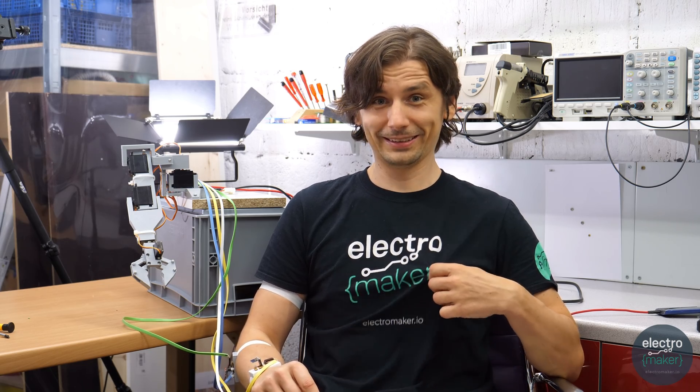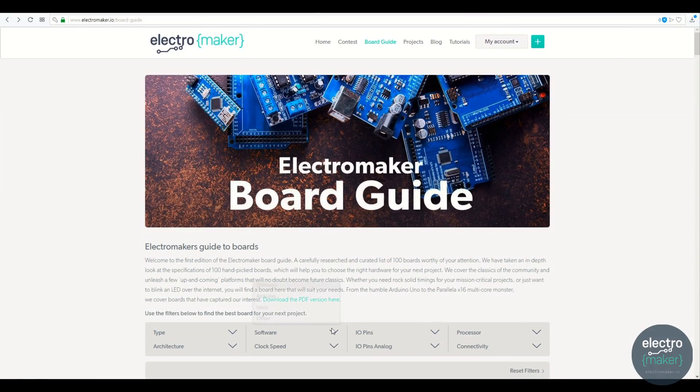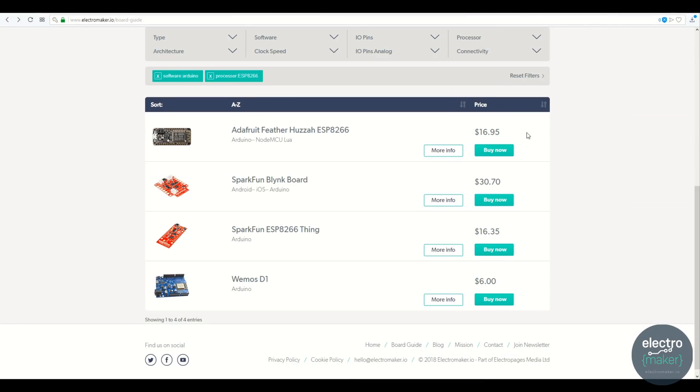And that's all for today. I hope you have enjoyed it as much as I did. Find all the build details and the files on the project page on electromaker.io and if you sign up there you get the chance to win some cool swag like this t-shirt and other cool stuff. And while you are there check out the board guide for the right board for your next project.